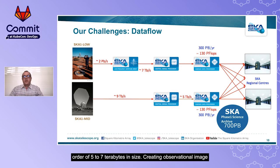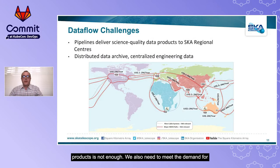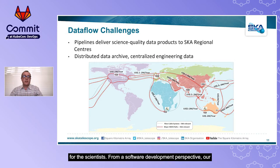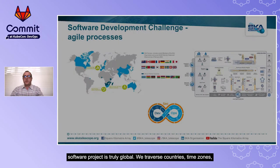Creating observational image products is not enough; we also need to meet the demand for distributing the data so that scientists can do the real science. This includes a program of upgrading global networks and establishing SKA regional science centres that act as distribution and processing hubs for the scientists. From a software development perspective, our software project is truly global — we traverse countries, time zones, languages and cultures to meet the needs of the domain specialists involved.